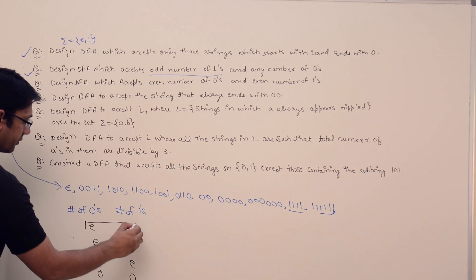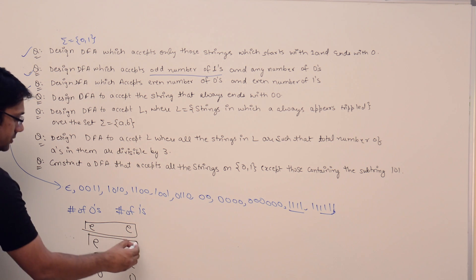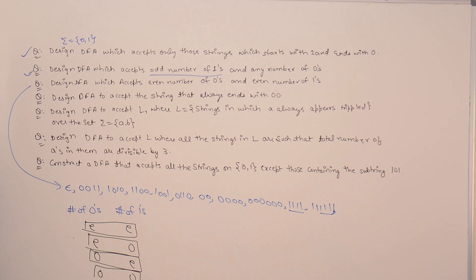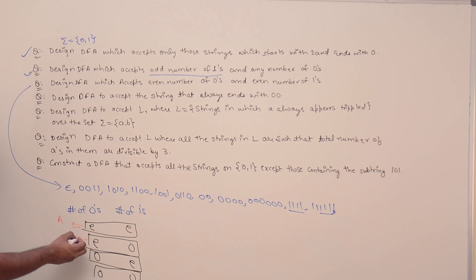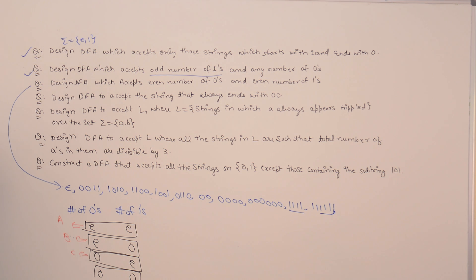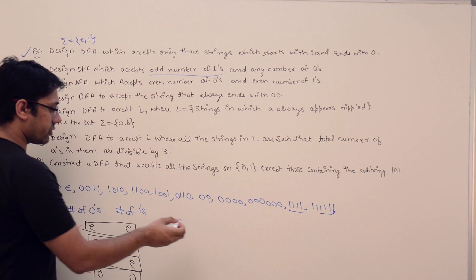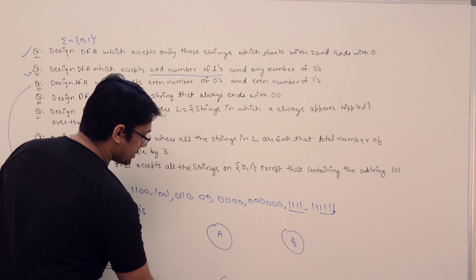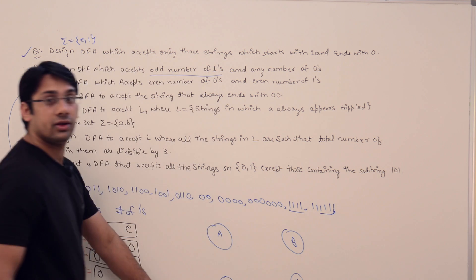The first possibility is both zeros and ones even. The second is even-odd. The third is odd-even. And the fourth is odd-odd. We need to make states to represent all four cases. State A represents even-even, state B represents even-odd, state C represents odd-even, and state D represents odd-odd.